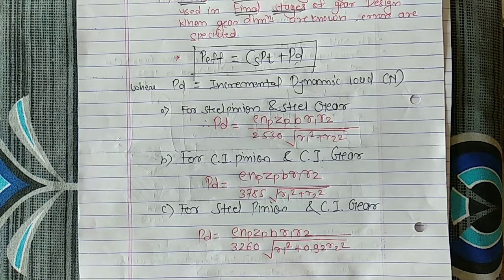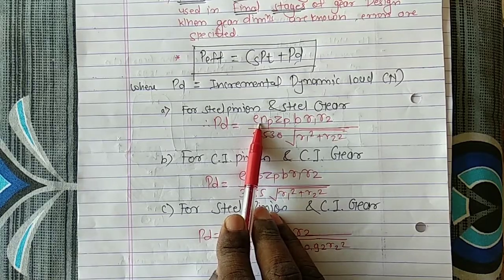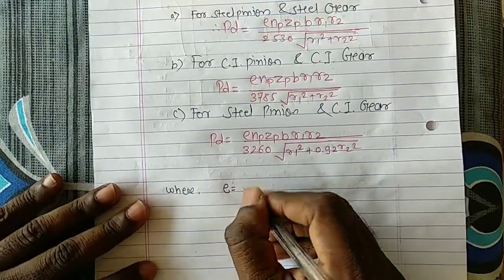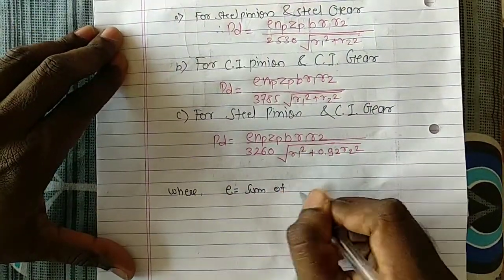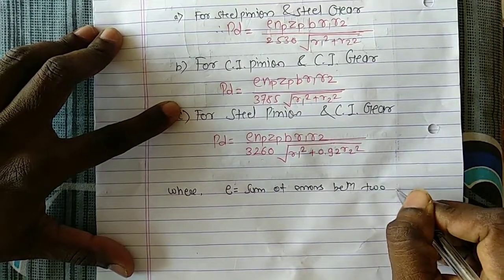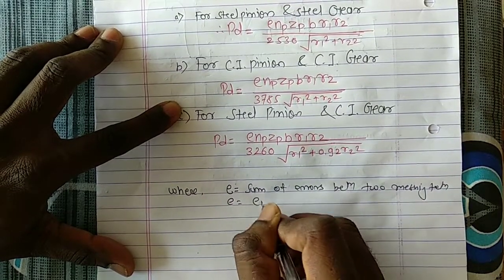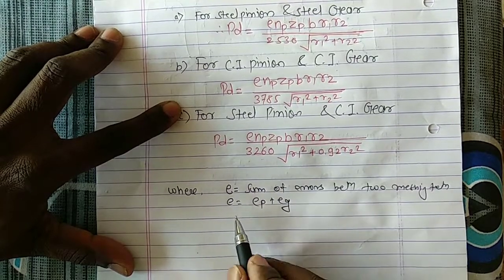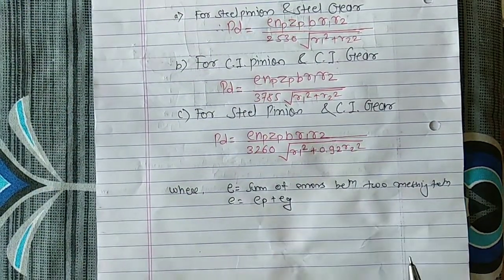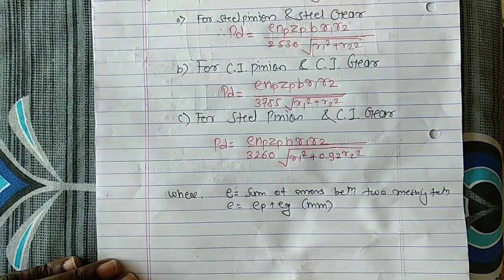Now, E is the sum of errors between two meshing teeth. It equals E_P plus E_G — the error of the pinion plus the error of the gear. It must always be expressed in millimeters. How to calculate this will be discussed shortly.